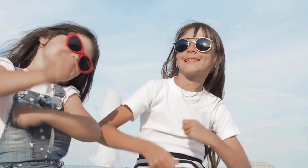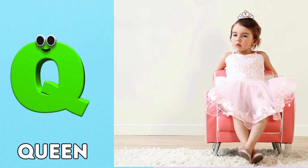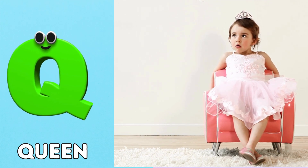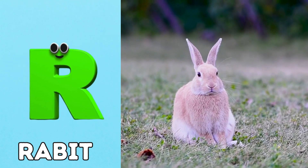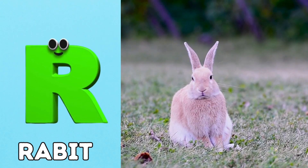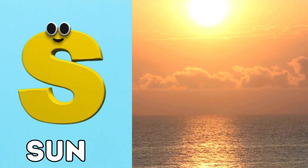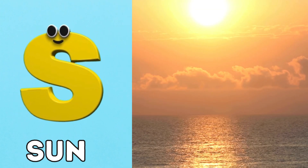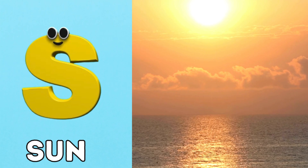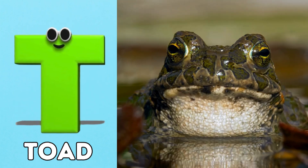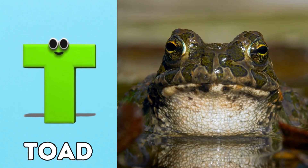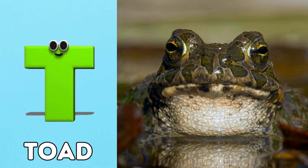Q is for queen, q-q-queen. R is for rabbit, r-r-rabbit. S is for sun, s-s-sun. T is for toad, t-t-toad.